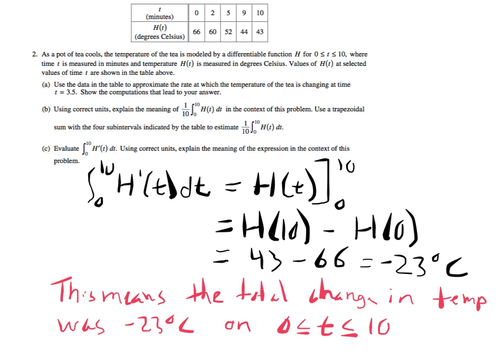First evaluate, then using correct units, explain the meaning of this expression in the context of this problem. When they say in the context of this problem, they're meaning don't just tell us in general what this integral would mean. In general it would mean the net change of some quantity. Specific to this problem, it means the net change in temperature, net or total change. And that's part C.